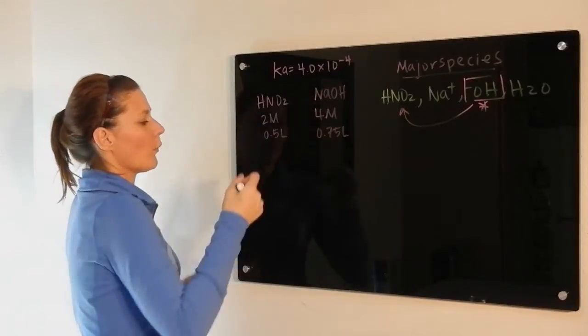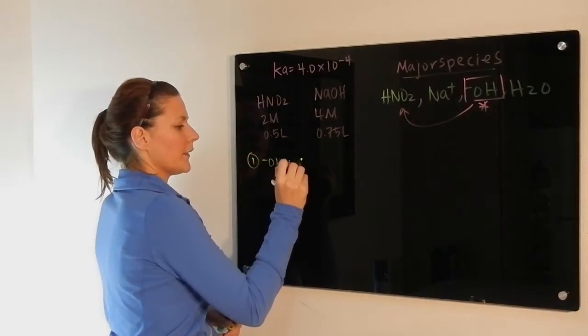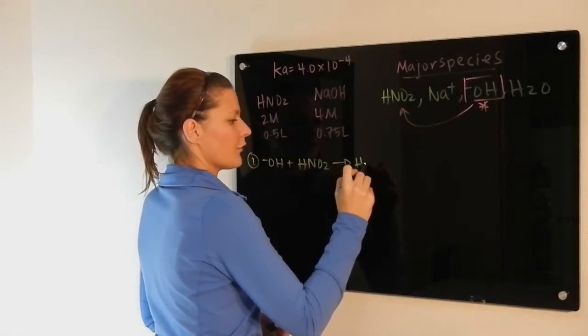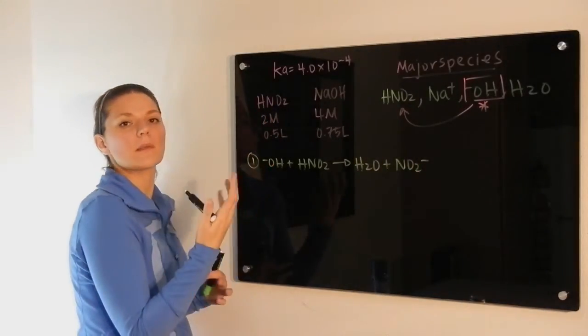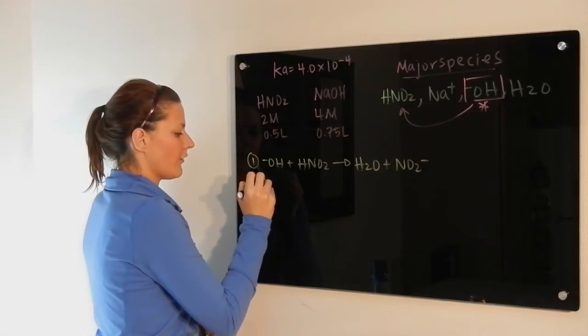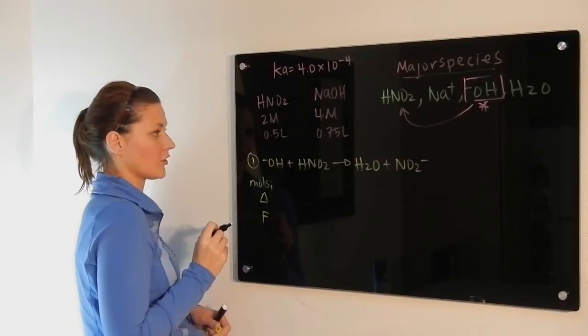So now we have the first step: the hydroxide plus your nitrous acid completely reacts to form H2O and nitrate. Once again, completion means stoichiometry, stoichiometry means moles. So we have our initial moles there, we have our change, and we have our final conditions.